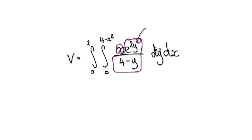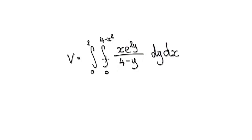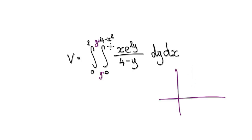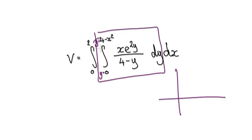To switch the order of integration you need to understand your region of integration first. Moving parallel to the y-axis means these bounds are y equals something to y equals something, so that this y matches up with the dy. We have no idea what the region looks like yet, so let's sketch it.